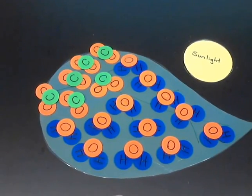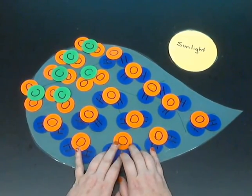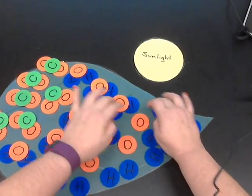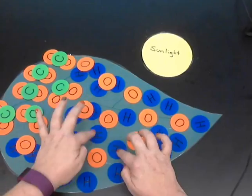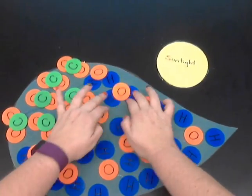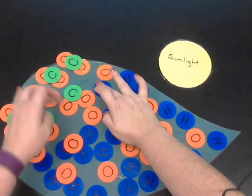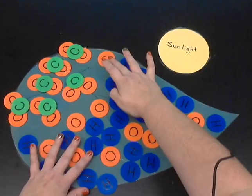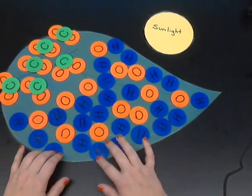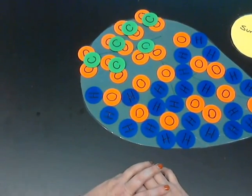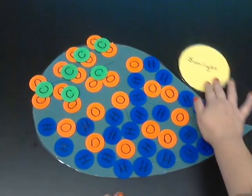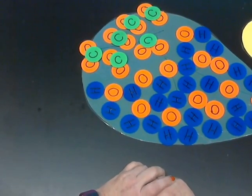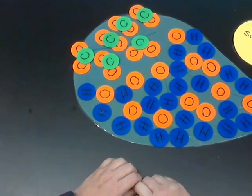As sunlight is absorbed, the light breaks apart the H2O, or the water molecules, in the leaf. Be sure to add the sun to the model that you created above. Now, separate your H2O, or water molecules, back into individual atoms, as we just did.